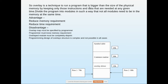Overlay is a technique to run a program that is bigger than the size of the physical memory. The total assembler is 200 KB but only 150 KB is available. By keeping only those instructions and data that are needed at any given time, we divide the program into modules such that not all modules need to be in memory simultaneously. Whichever module is needed at that point of time is loaded, and after execution it can be removed and the next needed module loaded.